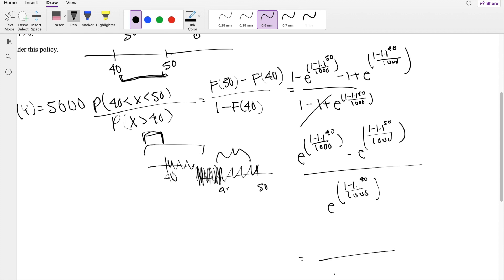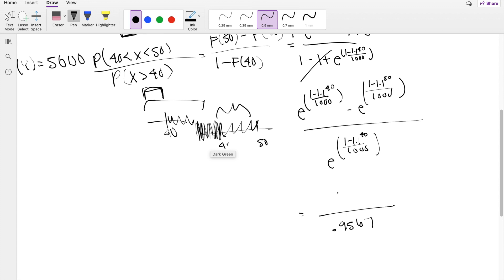So then this is equal to, on the denominator, you're going to get 0.9567. And on the numerator, you're going to get 0.0667. So this divided by that number equals approximately 0.0695.